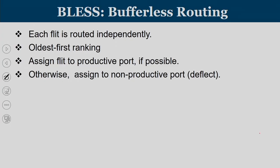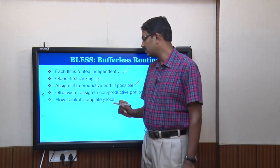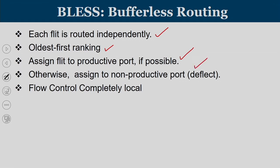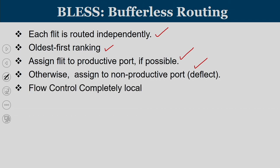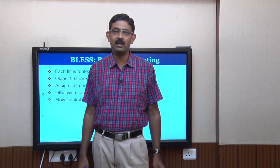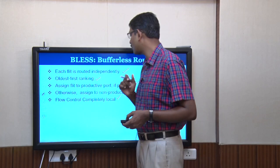In bufferless routing, each flit is routed independently, because there is no guarantee that flits of the same packet will get the productive port at the same time. Flits are independently routed and we must handle all design and implementation issues to ensure they reach the destination. The oldest flit gets priority and is assigned a productive port if possible; otherwise it gets a deflection port. Flow control is completely local — we do not look at adjacent routers for buffer availability, and no handshake mechanism is needed between adjacent routers.